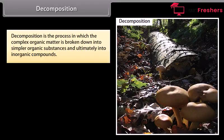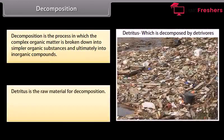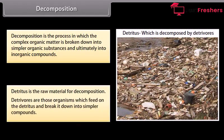Decomposition is the process in which the complex organic matter is broken down into simpler organic substances and ultimately into inorganic compounds. Detritus is the raw material for decomposition. Detrivores are those organisms which feed on the detritus and break it down into simpler compounds. There are following steps in decomposition.